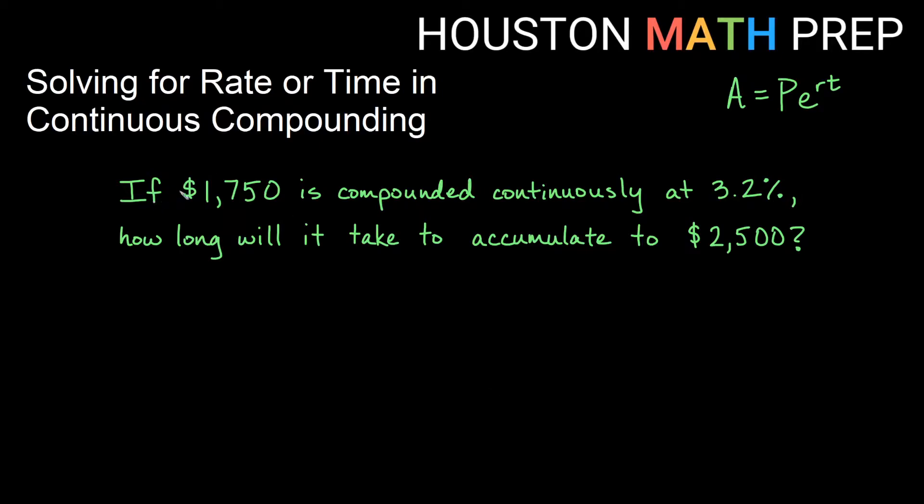So in our problem here we say if $1750 is compounded continuously, and remember those are the words that tell us we're going to use our A equals Pe^rt equation, at 3.2%, that's our interest rate, how long will it take us to accumulate to $2500?